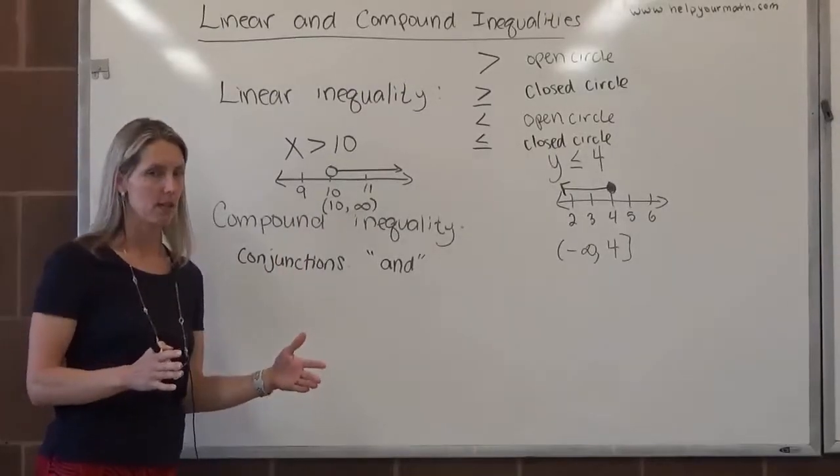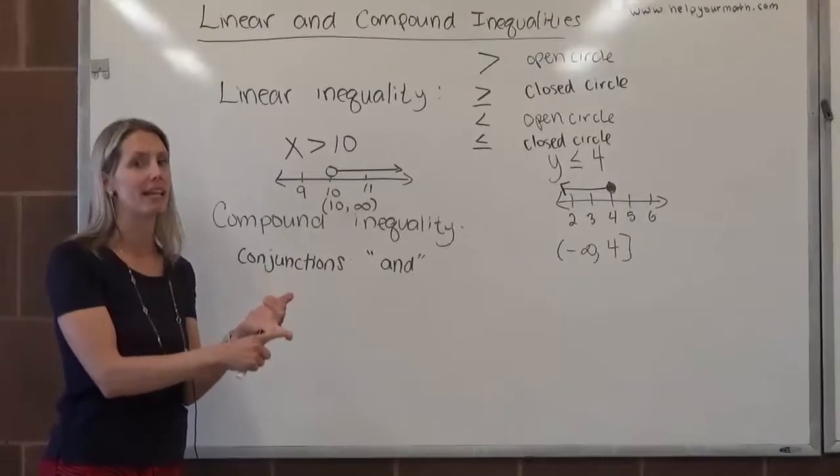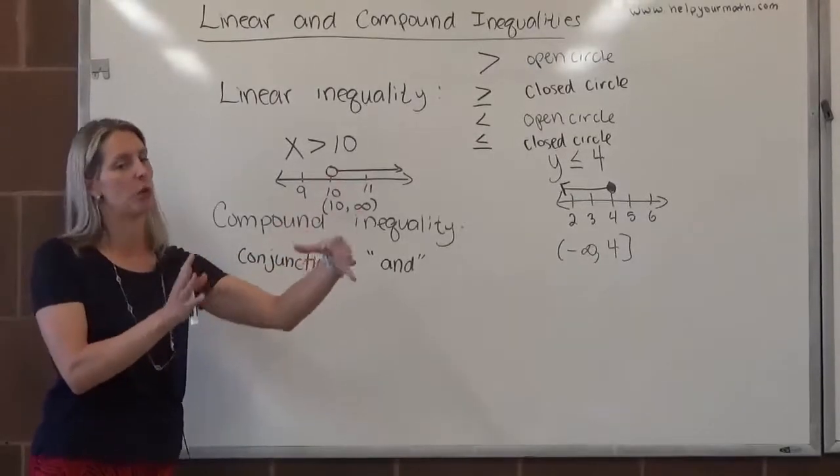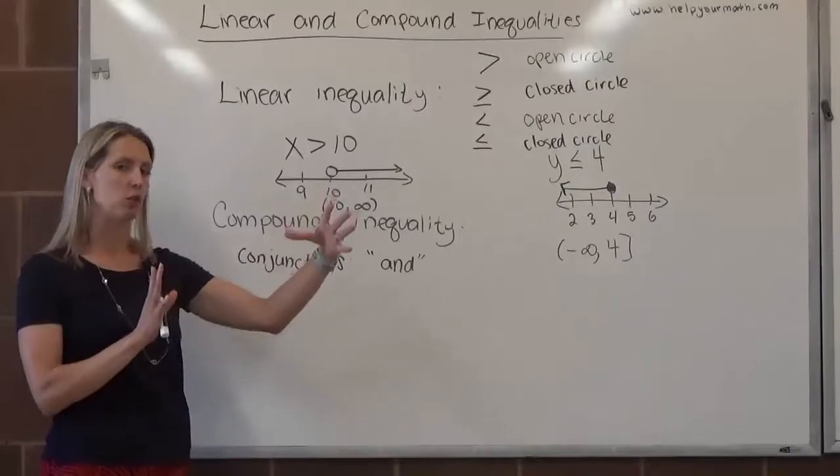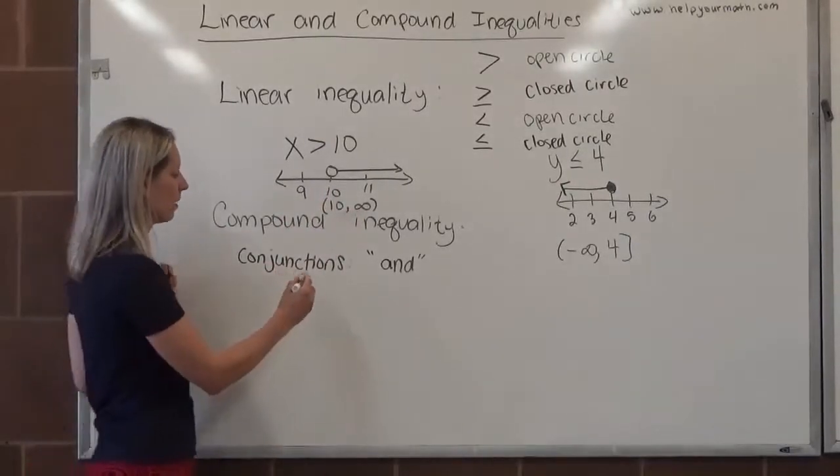If you think of a conjunction, that means you have to meet two requirements. If you're in your 20s, then the two requirements are you are 20 or older, but also you're less than 30. You're somewhere in between 20 and 30. With a conjunction, you have to meet two requirements.